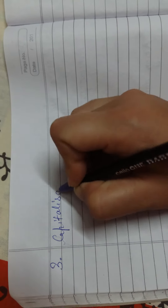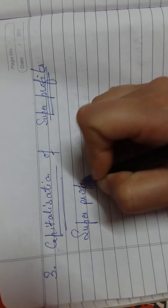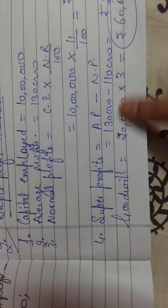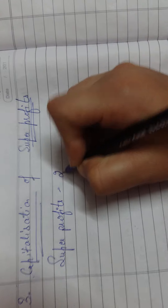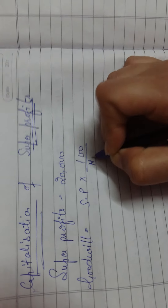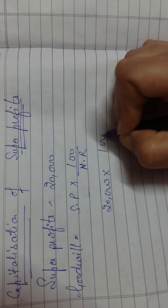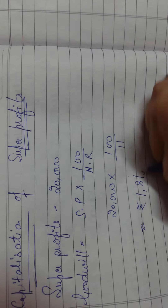Third is the capitalization of super profits method. The super profits are already calculated as rupees twenty thousand. The formula for goodwill is: goodwill equals super profits multiplied by one hundred divided by normal rate. That is twenty thousand multiplied by one hundred divided by eleven. The answer is approximately rupees one lakh eighty-one thousand eight hundred and eighteen.